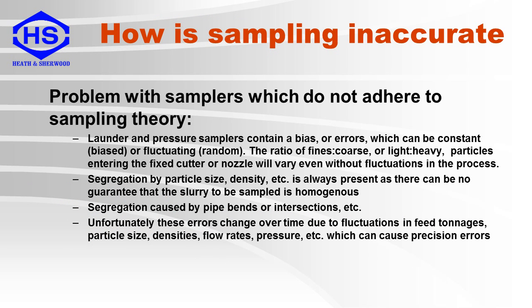In the previous video we looked at problems with samplers which do not adhere to the sampling theory. Launder and pressure samplers contain a bias or errors which can be constant or fluctuating. The ratio of fines to coarse, or light to heavy particles entering the fixed cutter or nozzle, will vary even without fluctuations in the process. Segregation by particle size, density, etc. is always present as there is no guarantee that the slurry to be sampled is homogeneous.